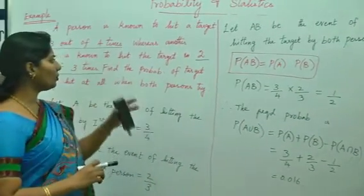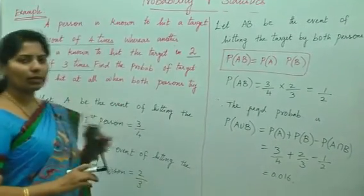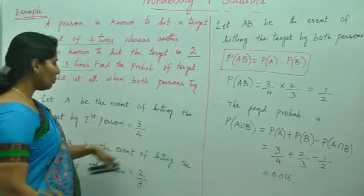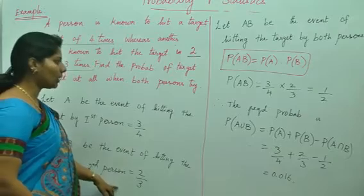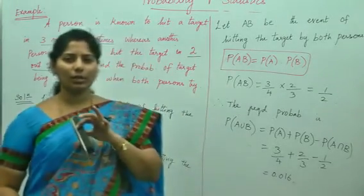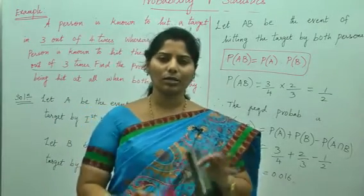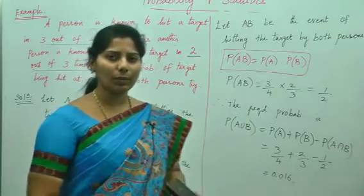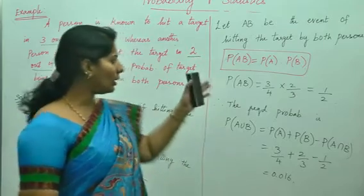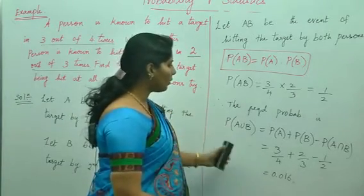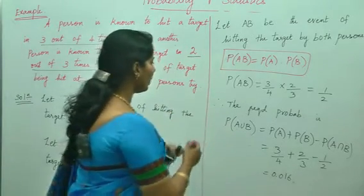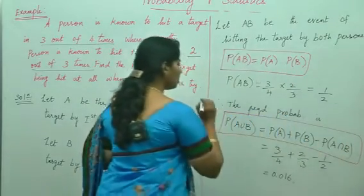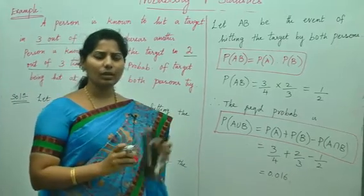Now listen, whenever they give you the question and ask you to find the required probability, just like that you should not write P of A is equals to this, P of B is equals to 2 by 3, P of AB is equals to this. They will definitely not give you marks. You need to explain what is the event A and what is the event B and what is the event AB and each and everything, even the formulas, everything you need to show it and this is the law of addition of probabilities. So this is how you need to find out the solution.